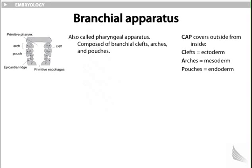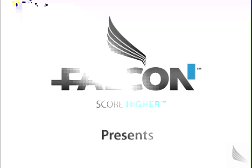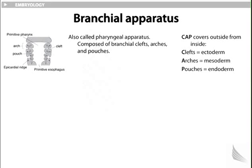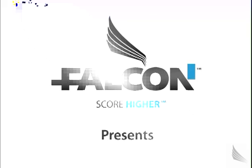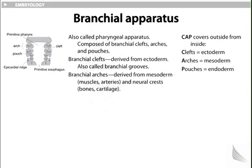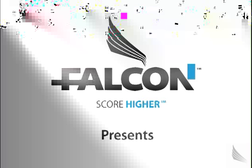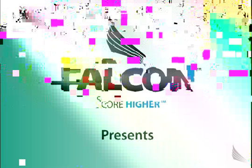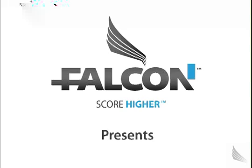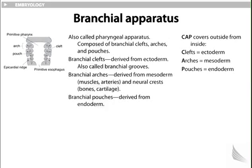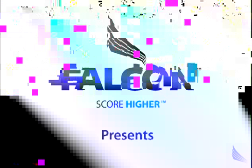Our discussion now brings us to the branchial apparatus, also called the pharyngeal apparatus, composed of branchial clefts, arches, and pouches. Branchial clefts are derived from ectoderm, also called branchial grooves. Branchial arches are derived from mesoderm — muscles, arteries — and neural crests — bones and cartilage. Branchial pouches are derived from endoderm. The mnemonic CAP covers outside from inside: Clefts (ectoderm), Arches (mesoderm), Pouches (endoderm) — all part of the branchial apparatus.